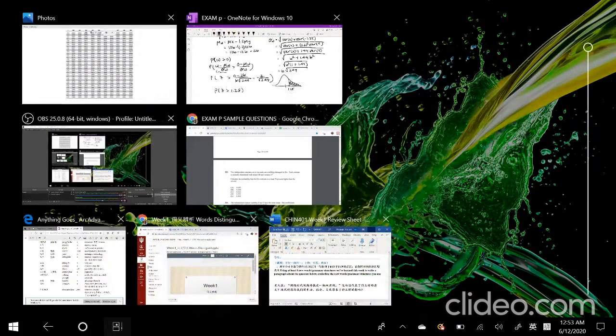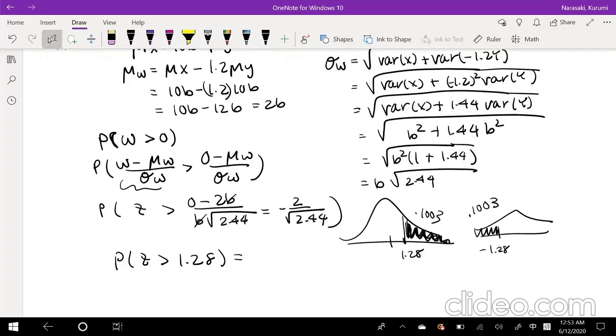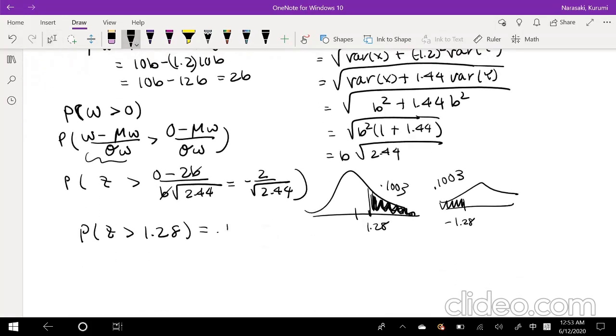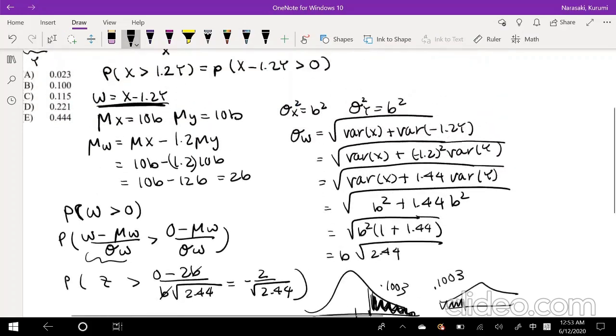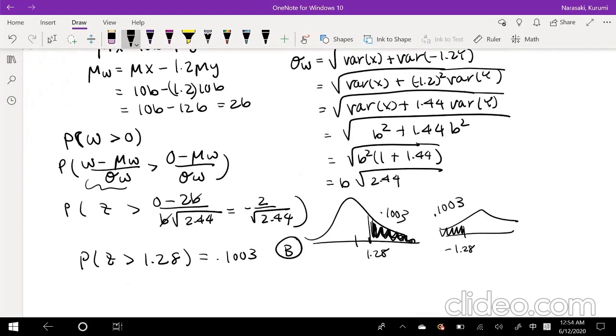Okay, so the probability right here. Actually, what we found in our Z score was negative 1.28, but because it's cumulative, it's this part. And that part is 0.1003. So then that's equivalent to this part, the probability of this part, which is also 0.1003. So the probability that Z is greater than 1.28 is equal to 0.1003, which is answer B. Yay!